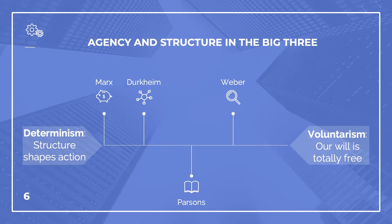Let me show you how these tensions play out in the work of the Big Three. Here I've come up with a spectrum of determinism versus voluntarism. Complete determinism is a state where all action is determined by social forces and free will is just a complete illusion — the structures that surround us wholly determine how we live and act. Alternatively, there is an opposite state of complete and total liberty, what we'll call voluntarism, where social order is simply the description of a million billion random acts not caused by structure.